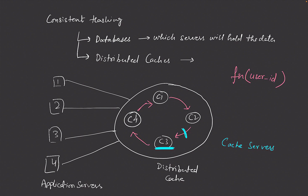Consistent hashing is a very generic concept used in a lot of places in system design, and we'll be referring to it when discussing many systems in the future. I hope you liked this video — if you did, please subscribe to my channel. I'll be creating more videos in this system design series soon. Stay tuned!